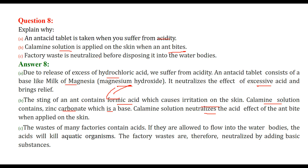Factory waste is neutralized before disposing of it into water bodies. Most factory waste is acidic. If sent directly to rivers or other water bodies, the acid can harm aquatic organisms — living plants and animals — causing them to die or suffer hostile effects. So factory waste is first neutralized by adding a basic substance so that it doesn't harm aquatic flora and fauna.